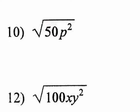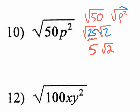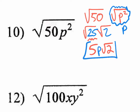Number 10 is also a square root. Split the square root to the 50 and to p². For 50, rewrite it as 25 times 2 — not 5 times 10. That way you have a perfect square. The square root of 25 is 5, and the square root of 2 stays. The square root of p² — dividing the exponent by 2 — is just p. Final answer: 5p√2. Anything without a radical goes out front.